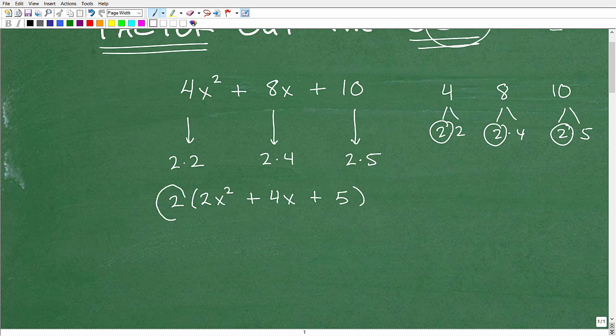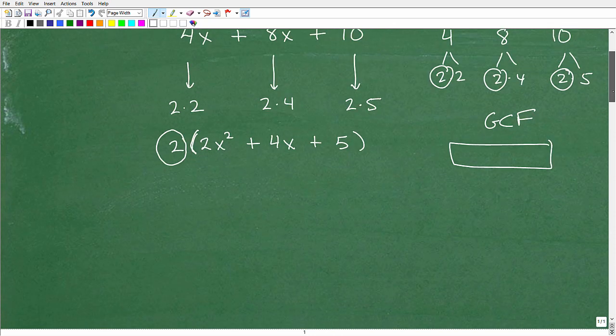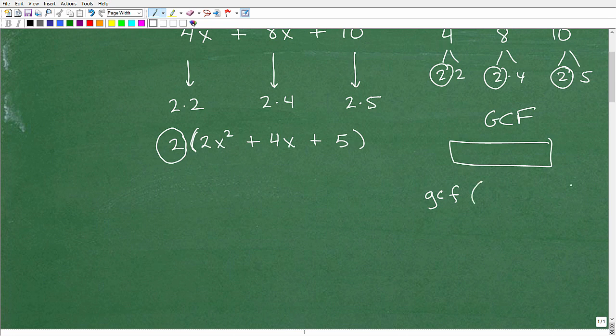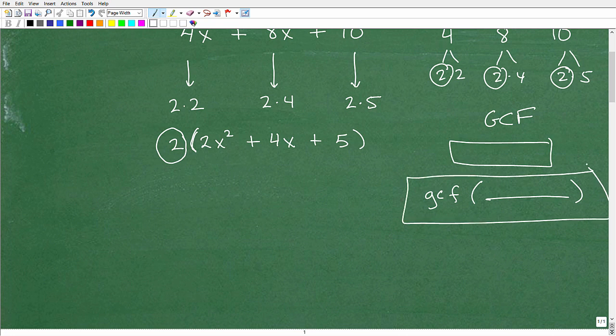The greatest common factor is 2, so I'm going to write that here and put parentheses. Anytime you have a greatest common factor in an expression, you're always going to factor it like so. It's going to be your GCF, whatever that is, then parentheses. Whatever remains is going inside, and this is your answer. So it'll be the GCF, parentheses, then some other stuff, end parentheses.